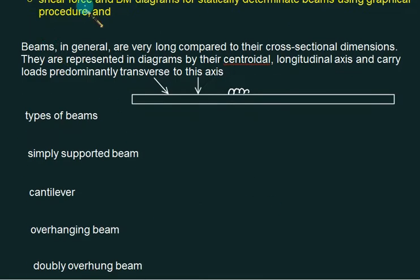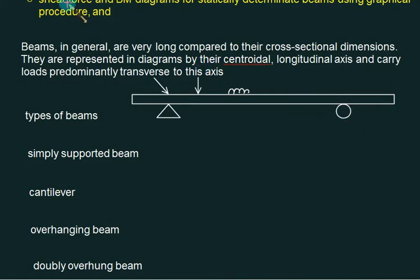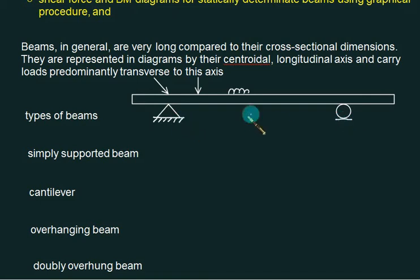To classify the types of beam, it entirely depends on where we place the supports. We normally require two supports: one is called a fixed support and one is called a roller support. For a fixed support, we normally have two reactions, and for a roller support we have one reaction.